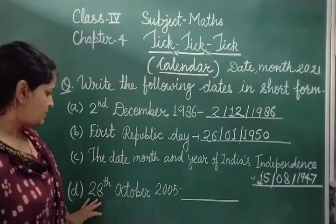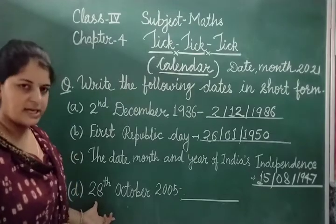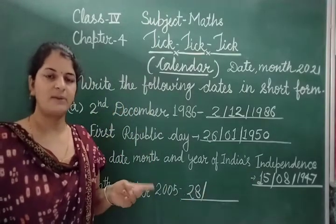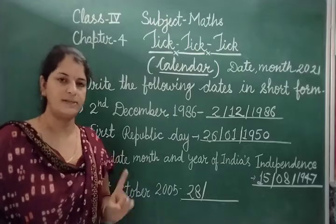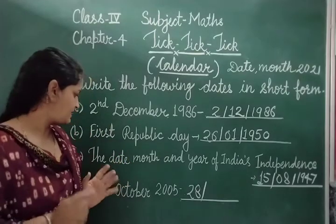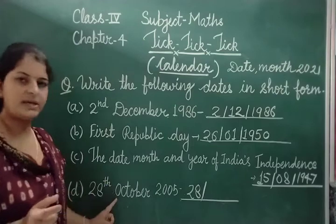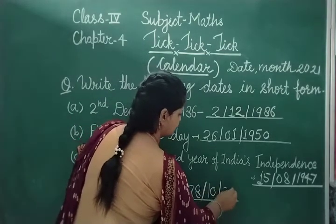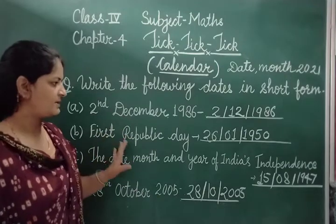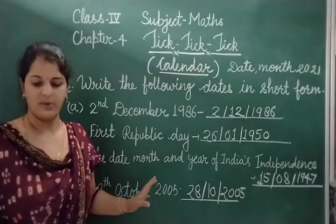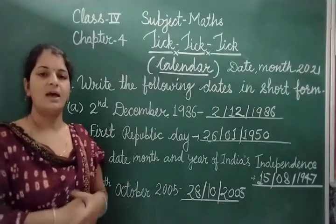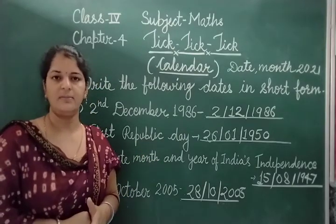Next is 28 October 2005. The date is given as 28. Now if you are confused, count the months: January, February, March, April, May, June, July, August, September, October — October is the 10th month, and the year is 2005. So the short form is 28/10/2005. You have more questions of this type on page 25 of your workbook — practice them well.